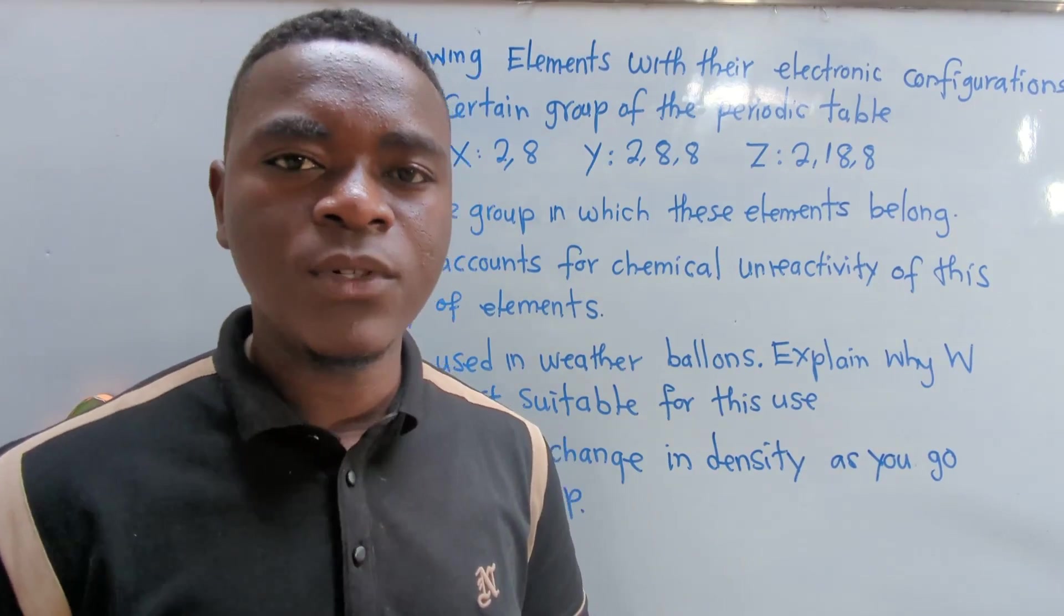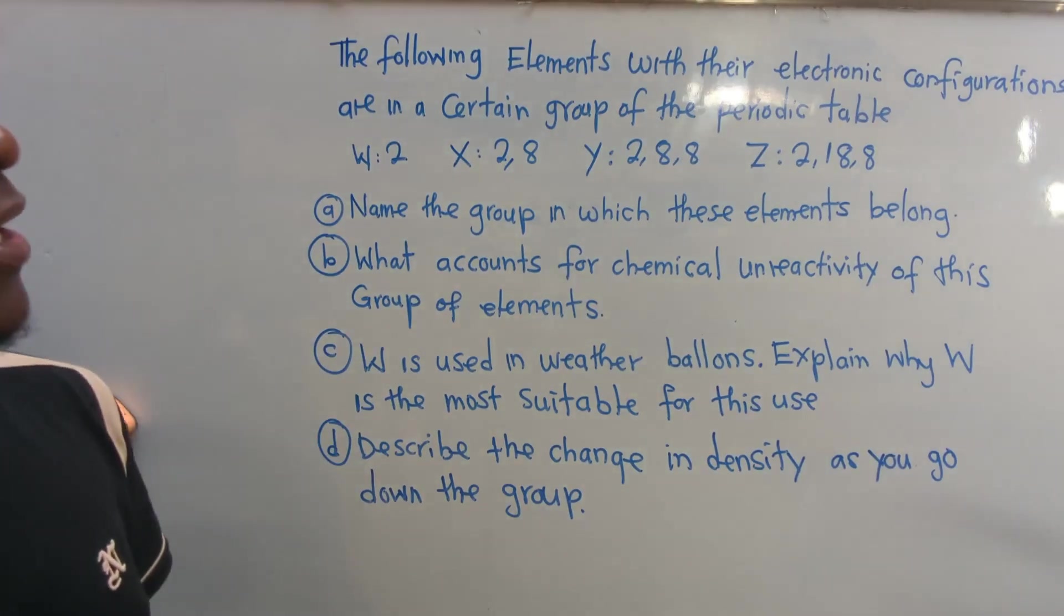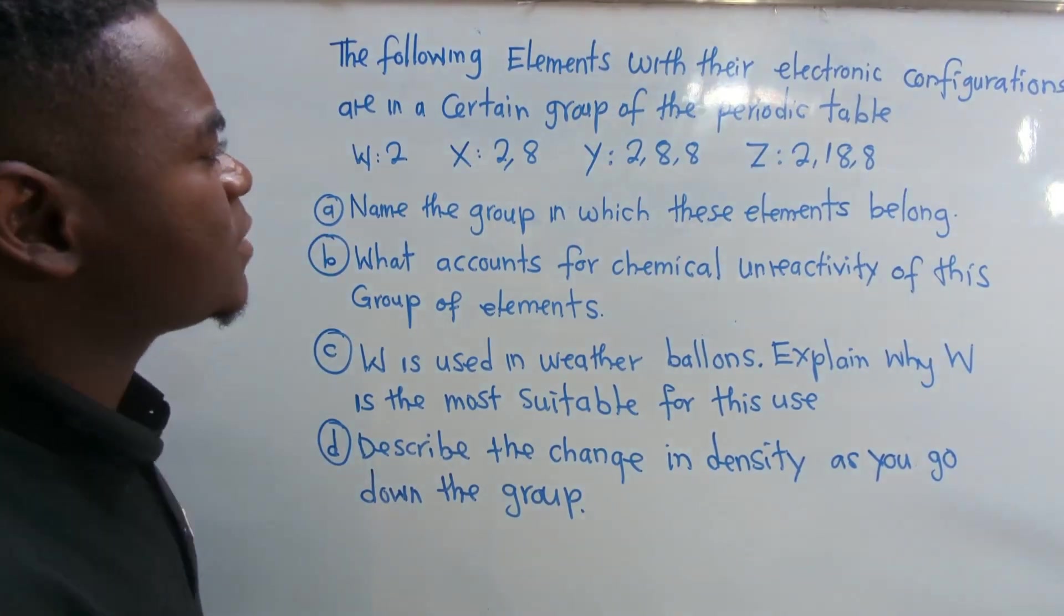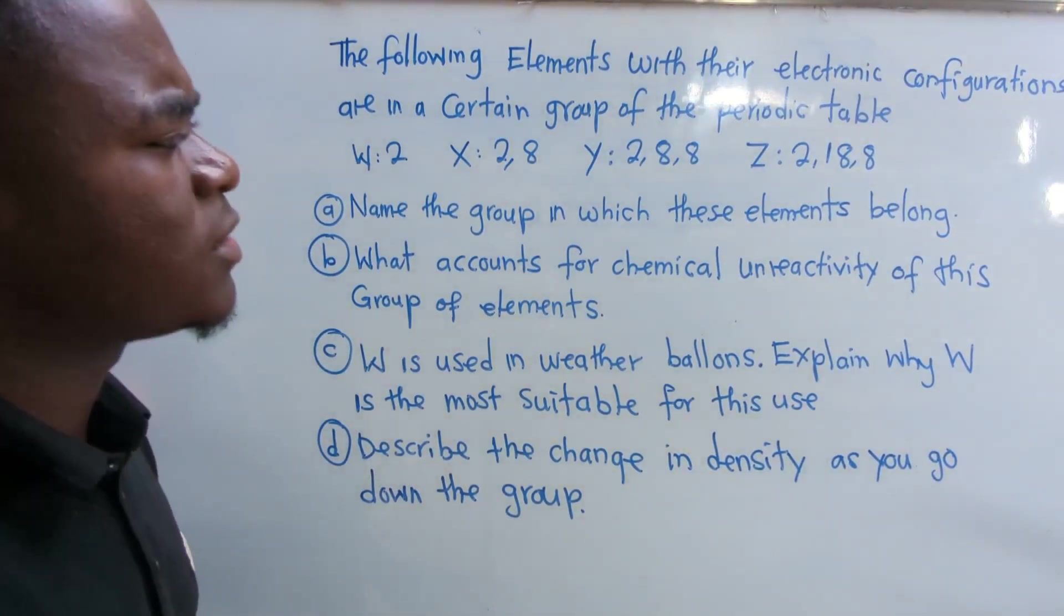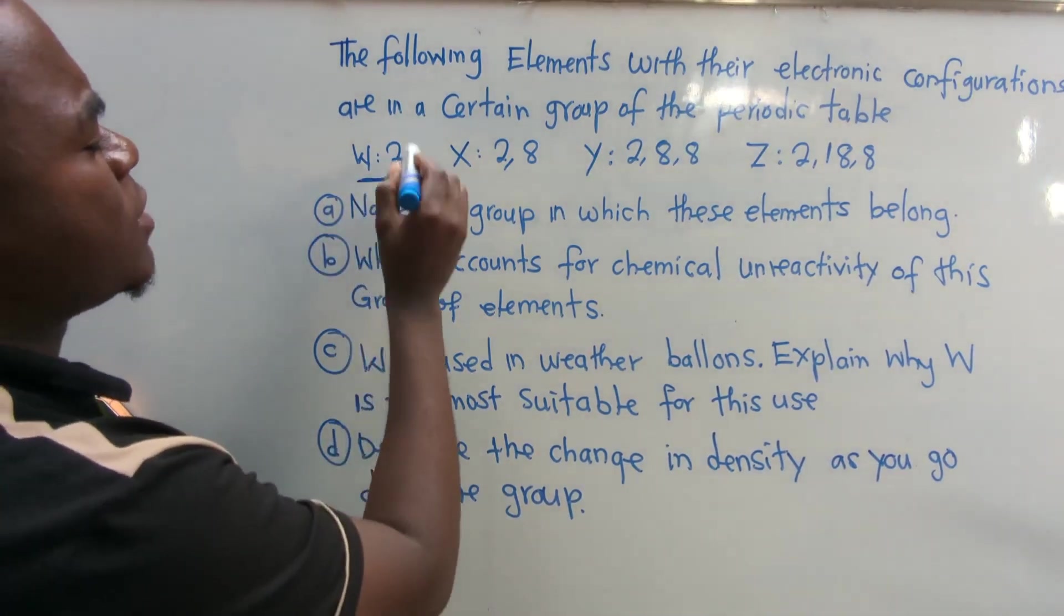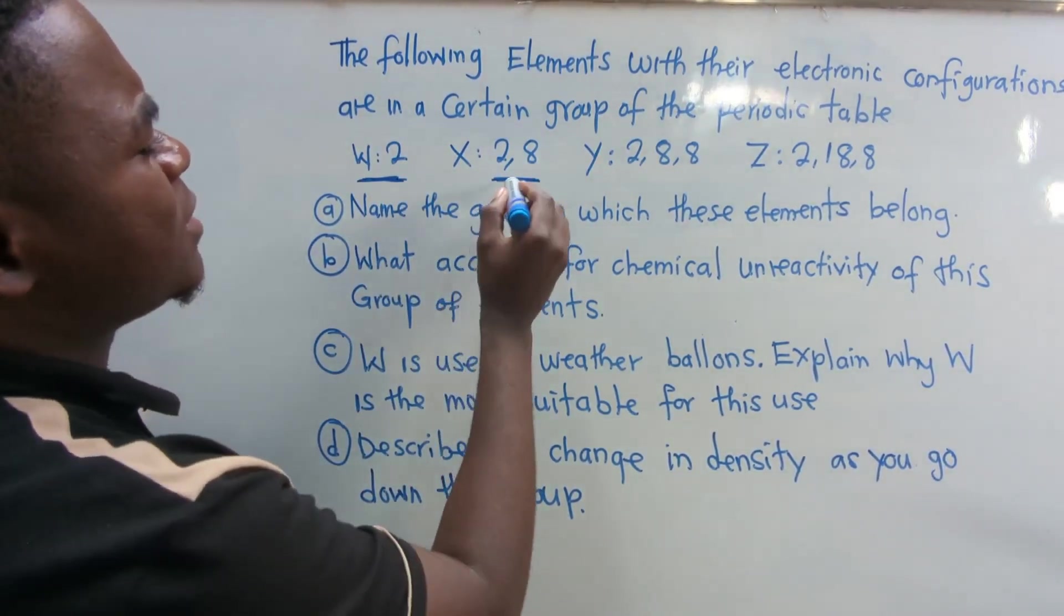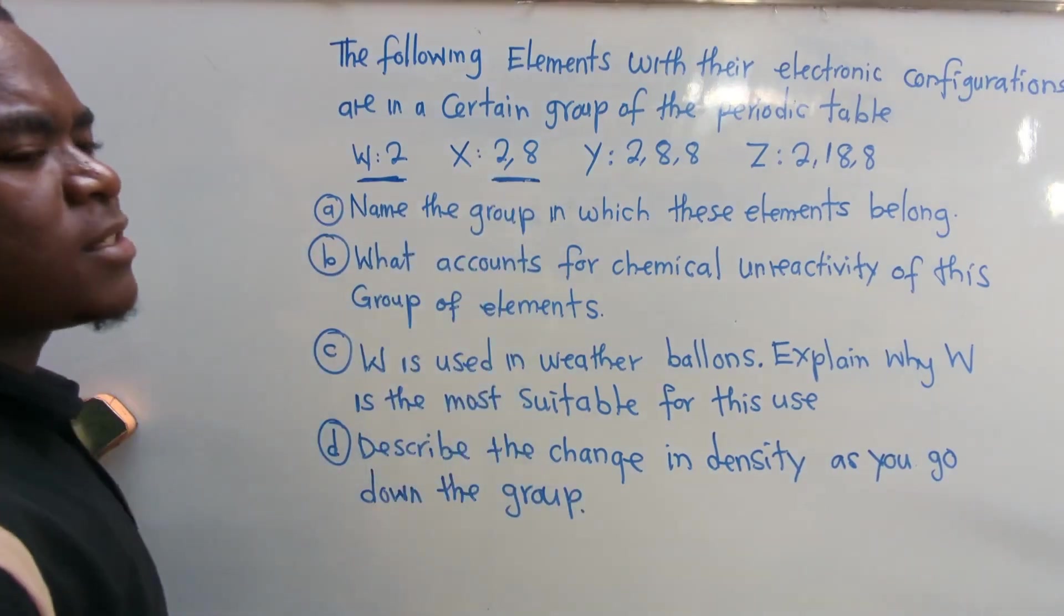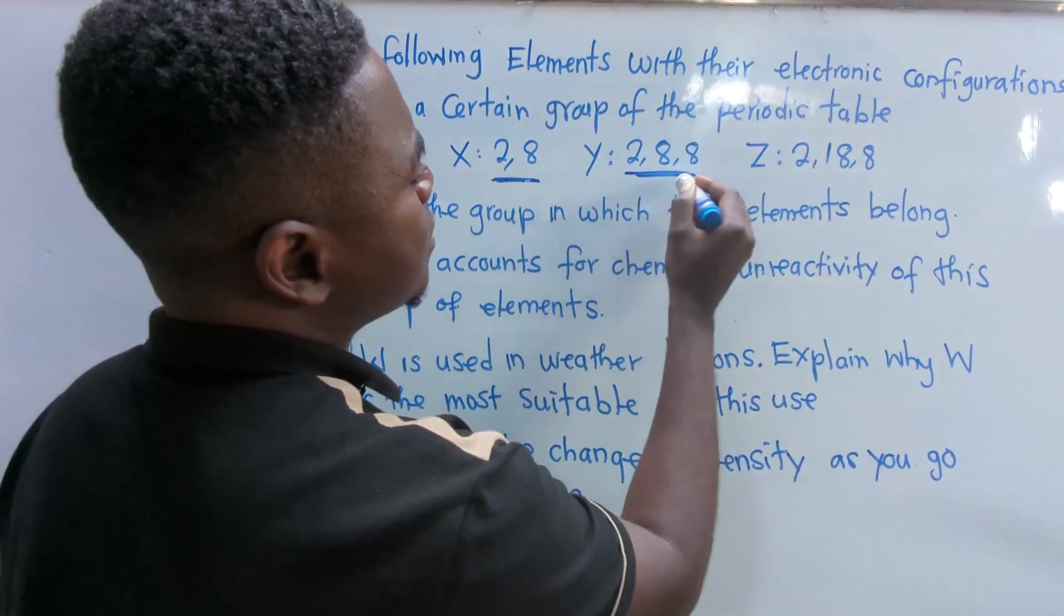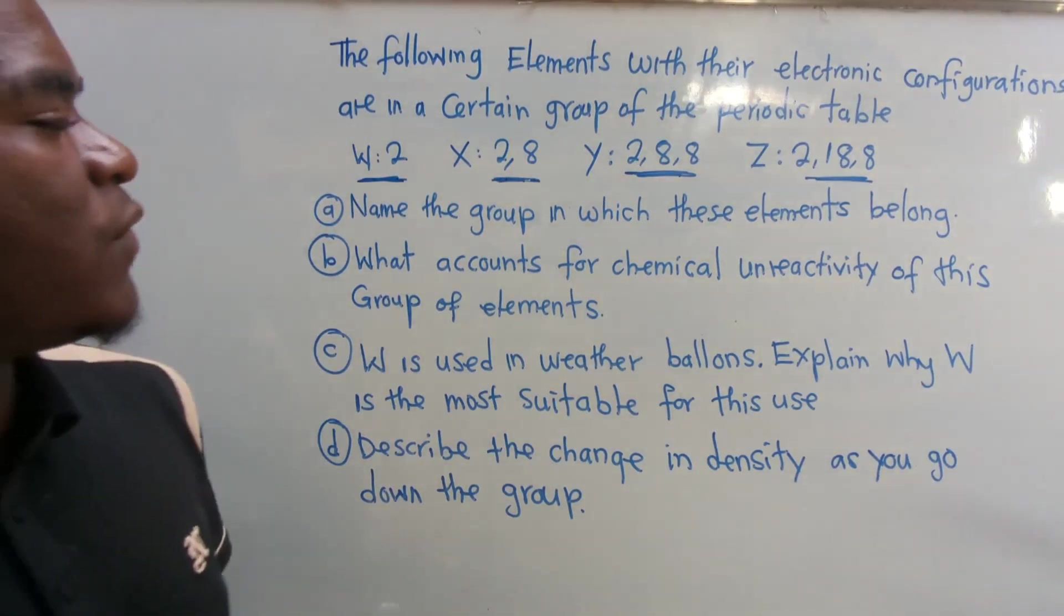So the first question is, the foreign elements with their electronic configuration are in a certain group of the periodic table. You are given W: 2, X: 2,8, Y: 2,8,8, Z: 2,8,8. This is what we are given.